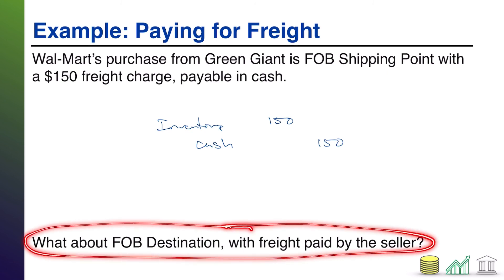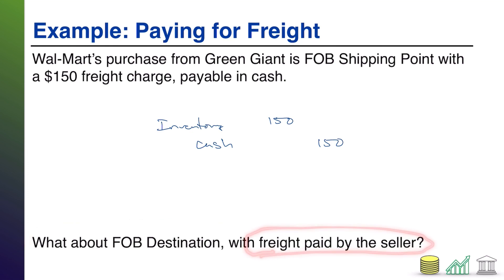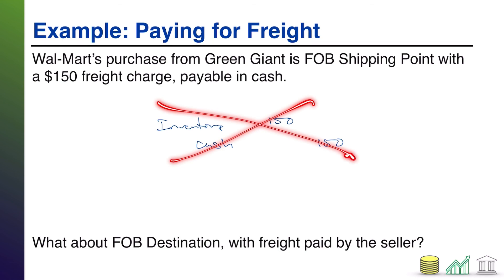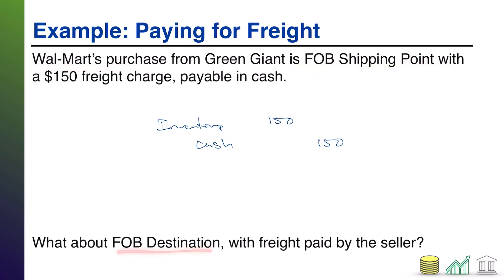What about FOB destination with freight paid by the seller? When a seller pays freight — in this case, if Green Giant paid freight — Walmart wouldn't record that extra journal entry because Walmart didn't spend any additional money to get the inventory. Therefore, Walmart would only record the $3,800 price tag and that would be it. Typically, whoever owns the goods while they're on the truck is the one paying for that mode of transportation — so FOB shipping point pairs with the buyer paying freight, and FOB destination pairs with the seller paying freight.